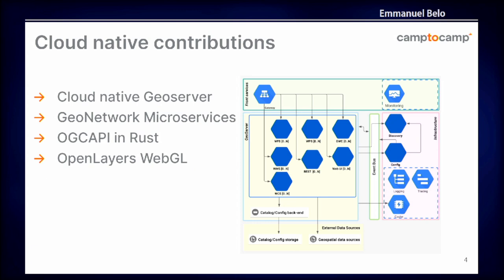In these four minutes I can't go into details, but we recently worked on GeoServer cloud native — you have here a screenshot with the microservice architecture of GeoServer so that you can scale it on the cloud. We also worked on the same topic on GeoNetwork and on a Java application. We built an OGC API in Rust to support the stack, and we also work in OpenLayers WebGL to be able to process massive amounts of data on the front-end side in the browser.